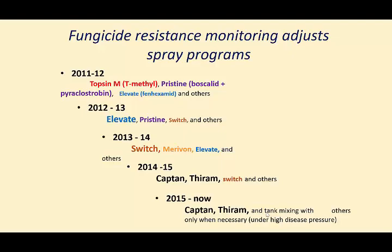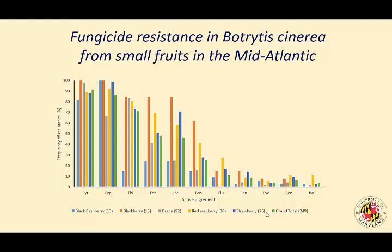We also looked at resistance issues in Botrytis isolates from other small fruits in our region, including grapes, raspberries, and blackberries. The resistance pattern is pretty similar across different crops. In general, fludioxonil and newer SDHI fungicides still had much less resistance compared to active ingredients introduced 30–40 years ago.